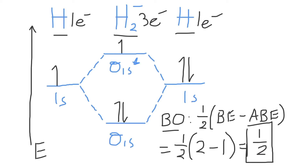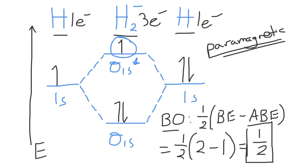Is the H2 minus molecule paramagnetic — attracted to an external magnetic field — or diamagnetic — repelled by an external magnetic field? Because H2 minus has an unpaired electron in the antibonding molecular orbital, the H2 minus molecule is paramagnetic, meaning it will be weakly attracted to an external magnetic field. That's it for this video, thanks for watching.